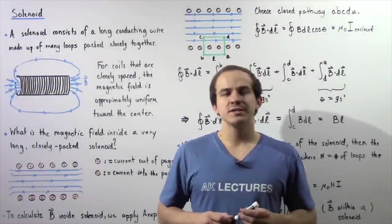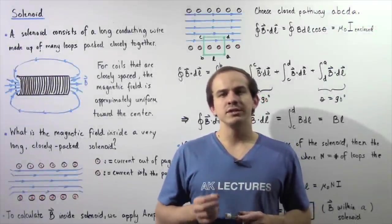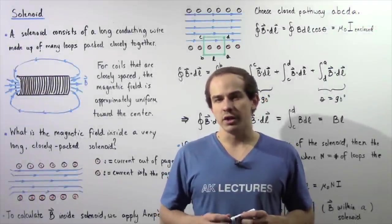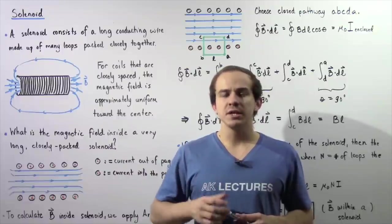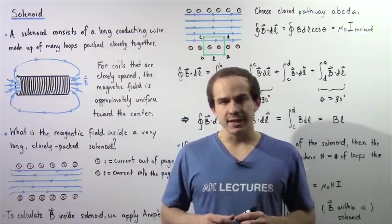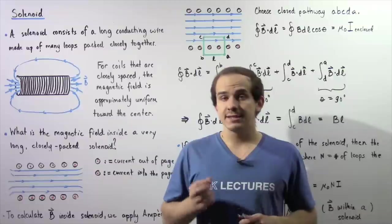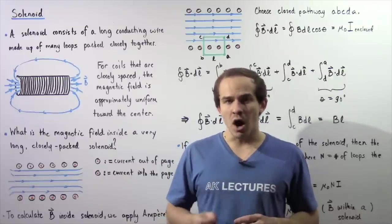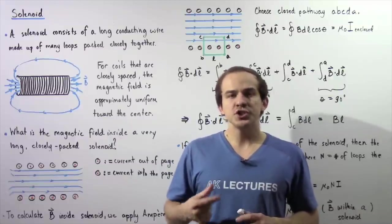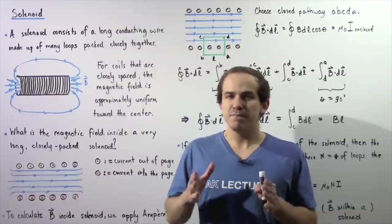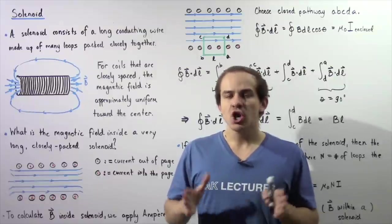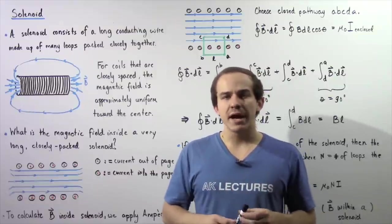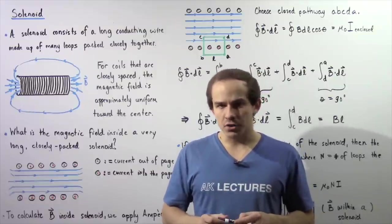In this lecture we're going to discuss an important device known as a solenoid. A solenoid looks something like a slinky. It consists of a long and continuous conducting wire which is made up of many loops packed very closely with respect to one another.